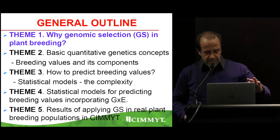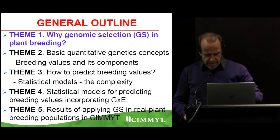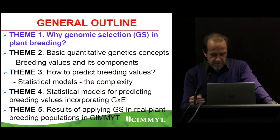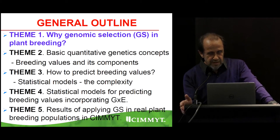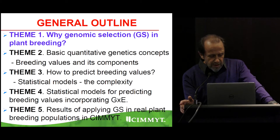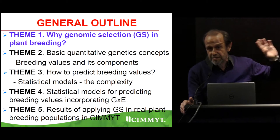These are the five themes here: basic quantitative genetics, how to predict breeding values, models for G by E, and then some results — actual results in wheat as well as maize. If you know genomic selection, you can skip all the themes and wait until the last one.